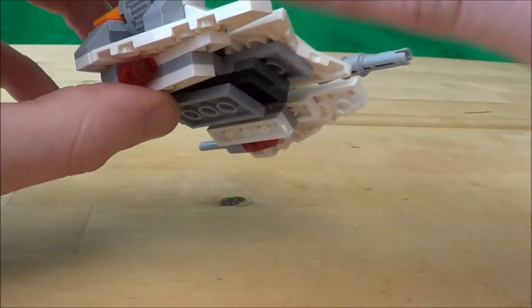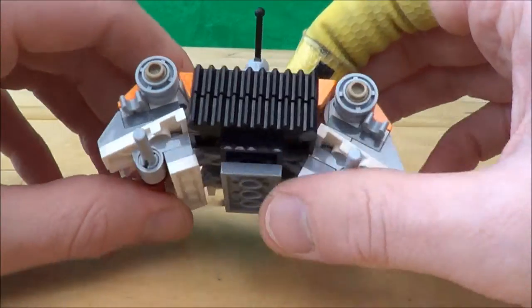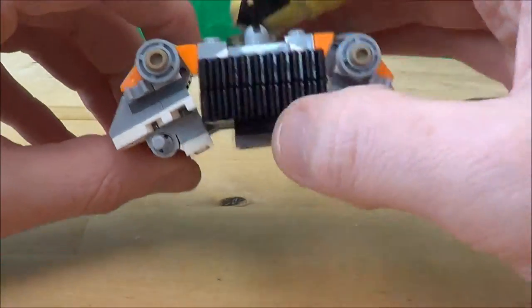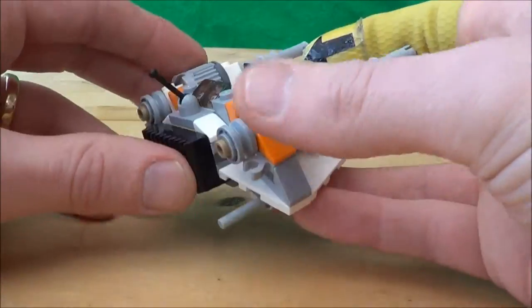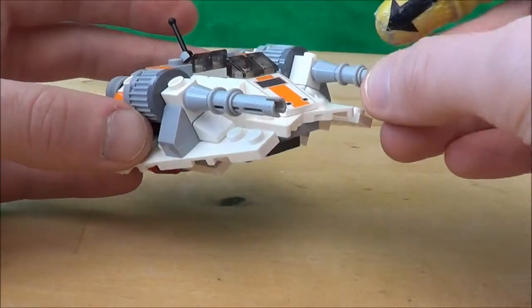There are quite a few bricks in this. It's very compact, very solid. Spin it round. Some nice textured plates there. Obviously a little antenna that goes on the back and these big guns on the front.